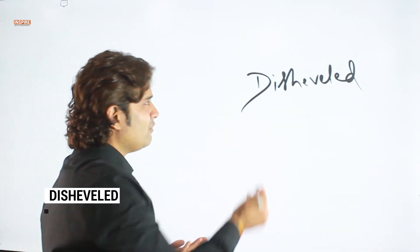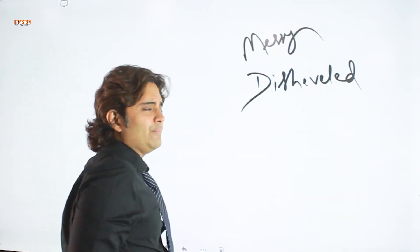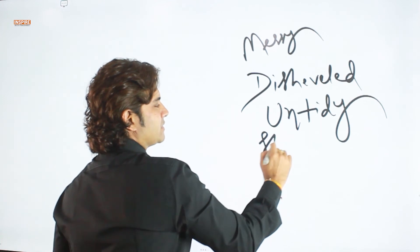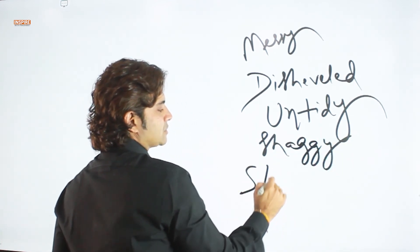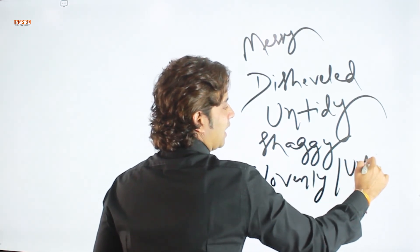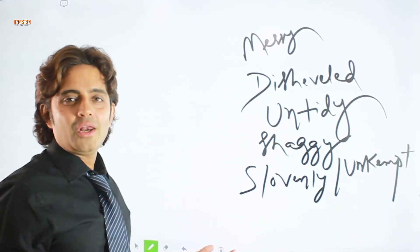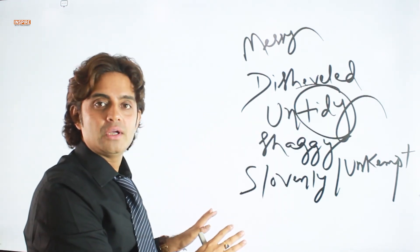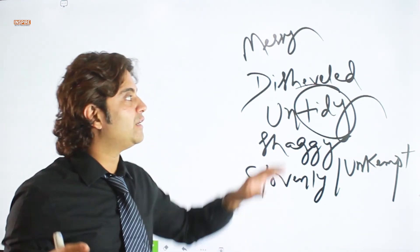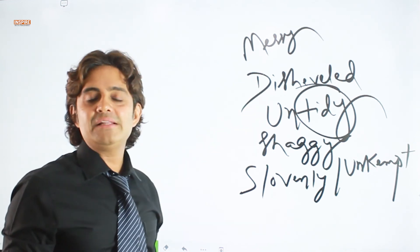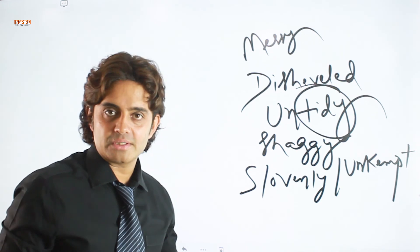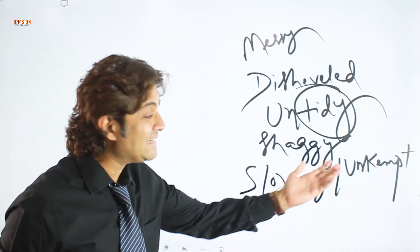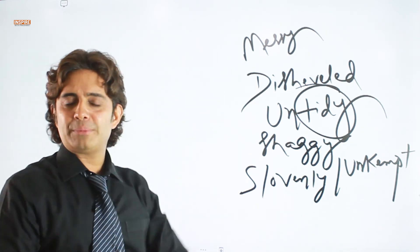Disheveled. The basic reference is very messy. Something which is very shaggy, slovenly, unkempt — it's all about those words, because tidy means neat and trim, and this is exactly the opposite. The things are messy, completely disheveled. Like what happens in a boys' hostel — the rooms are always disheveled, untidy, slovenly, unkempt, shaggy, shabby. Messy is the basic reference word.